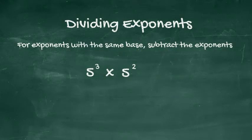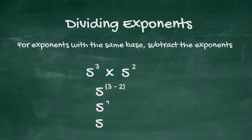In the problem above, 5 to the third divided by 5 to the second, 3 minus 2 equals 1. 5 to the power of 1 is 5.